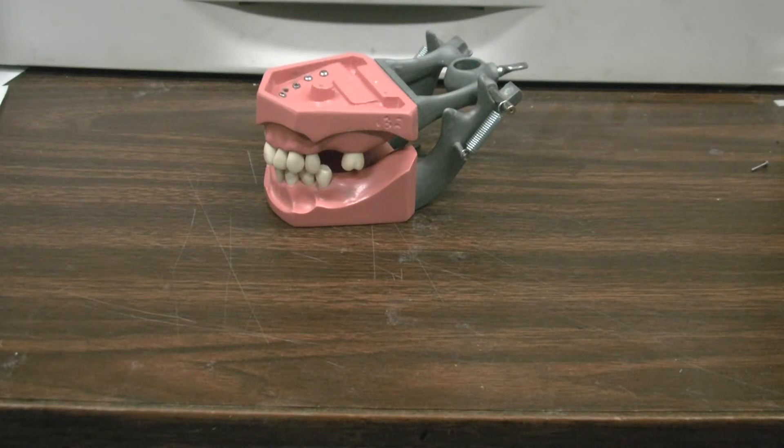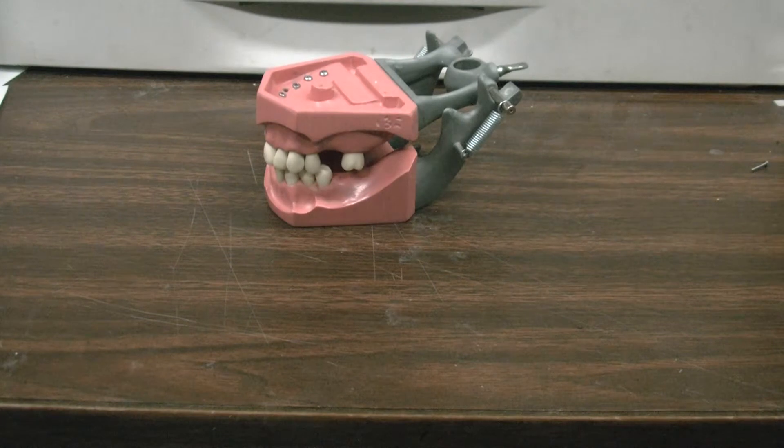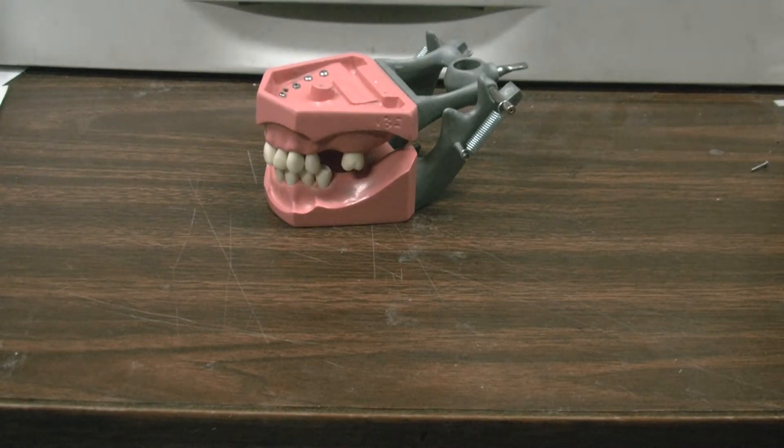So now, Roger refuses to demonstrate this, so I guess I have to do it. This is the Roger method of screwing a tooth into the removable typodon.